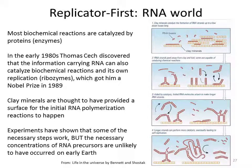Most biochemical reactions in life forms today are catalyzed by proteins, so-called enzymes. However, in the early 1980s, Thomas Cech discovered that information-carrying RNA can also catalyze biochemical reactions and its own replication — these RNAs are called ribozymes — which earned him a Nobel Prize in 1989. This finding led to the idea that self-replication of RNA molecules could have been one of the first steps in the origin of life. Since then the model has been refined and parts of it have been tested in the lab. A key idea in the RNA world model is that clay minerals are thought to have provided the surface for initial RNA polymerization reactions.